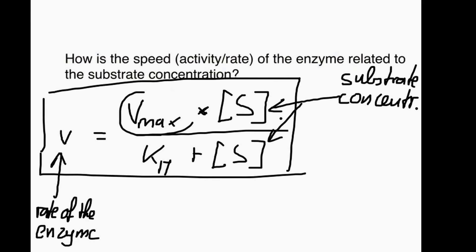Now this Vmax here is a very interesting thing. This indicates how fast the enzyme can go when there is loads and loads of substrate. So this tells us the maximum speed, the maximum rate of the enzyme.